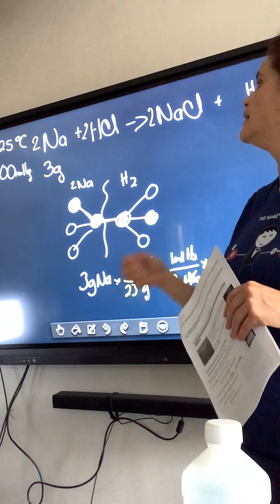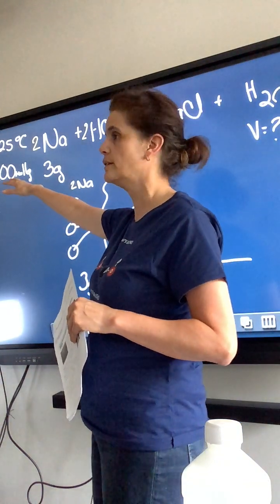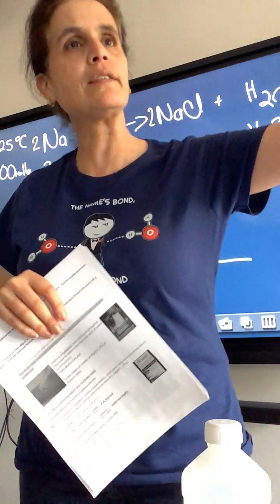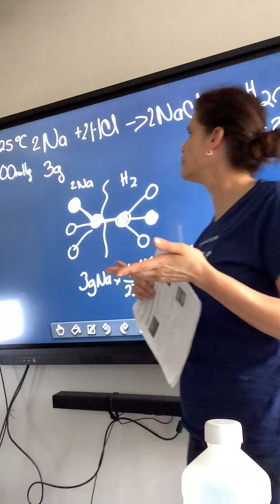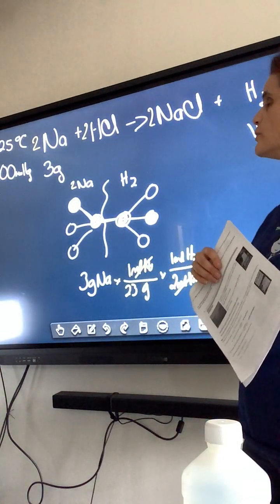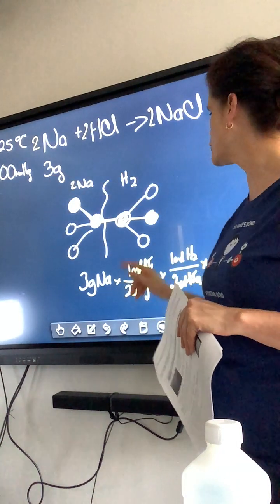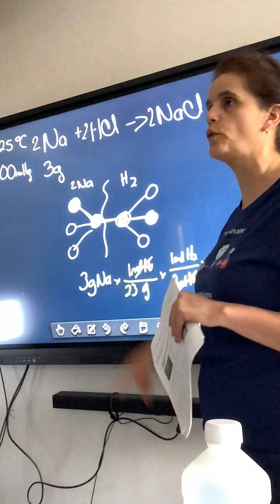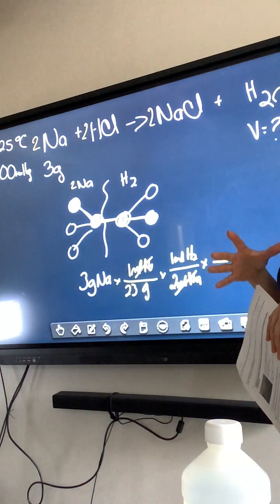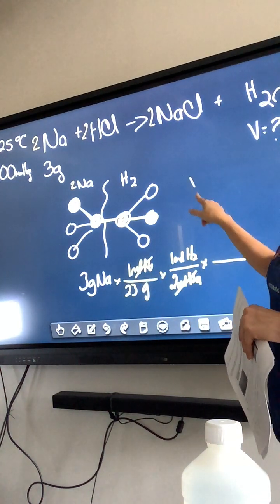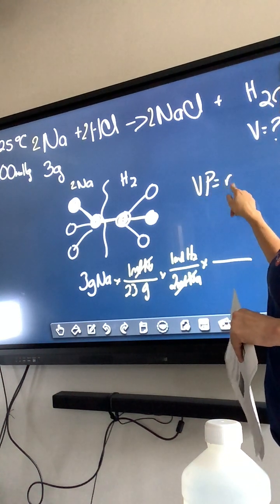Then I am going to do the last step, the last step is a conversion factor. We talked about how if we have a gas at STP, but it is not at STP. I told you that the temperature was 25 degrees C, that is not standard temperature. The standard temperature is 0 degrees C, 273 kelvin, 32 fahrenheit. That is not it and the pressure is not 1 atmosphere.